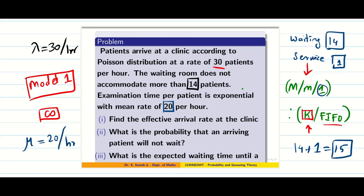The examination time per patient is exponential with 20 per hour, so the service rate mu is 20 per hour. In Model 1 there is no mention of waiting room limits. Here the waiting room accommodates not more than 14 patients, so this is a finite capacity M/M/1 FIFO model.